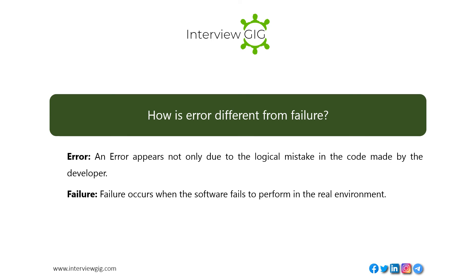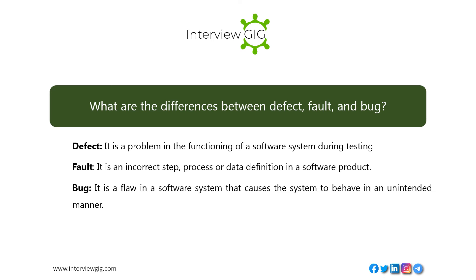How is error different from failure? An error appears not only due to a logical mistake in the code made by the developer. A failure occurs when the software fails to perform in the real environment. What are the differences between defect, fault, and bug? A defect is a problem in the functioning of a software system — a problem during testing. A fault is an incorrect step, process, or data definition in a software product. A bug is a flaw in a software system that causes the system to behave in an unintended manner.